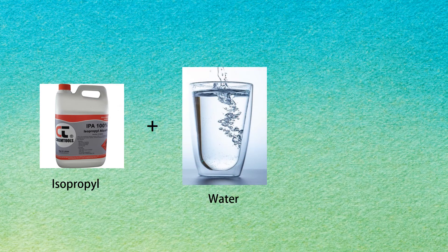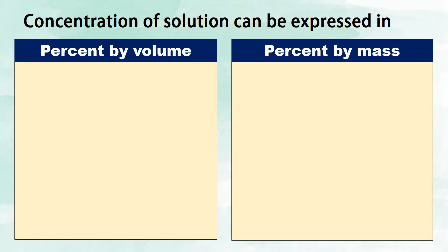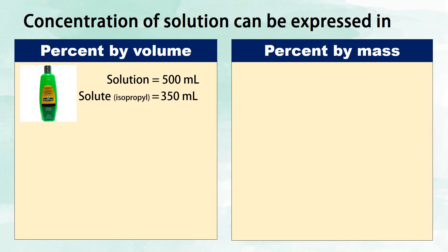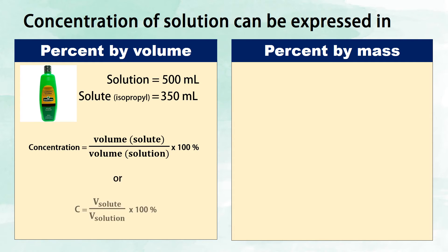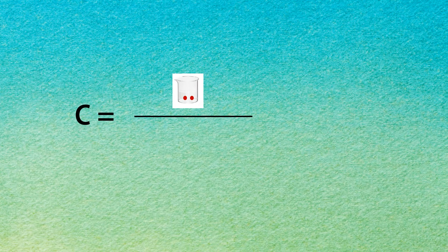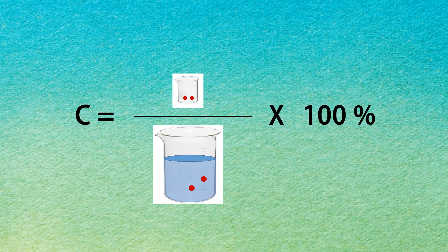For instance, isopropyl plus water equals isopropyl alcohol. This isopropyl alcohol has a volume of 500 ml, wherein 350 ml is the solute. To determine the concentration of solution, we will use this formula: the concentration of solution equals the volume of solute divided by the volume of solution times 100%, or c equals v-solute divided by v-solution times 100%. Just remember that the solute is the dividend and the solution is the divisor, times 100%.